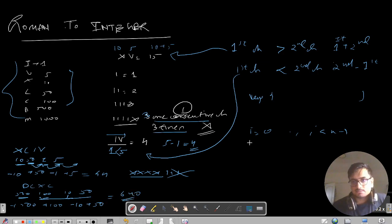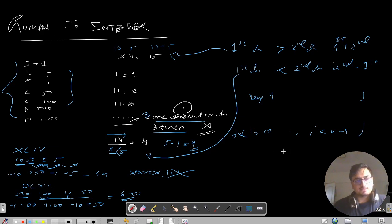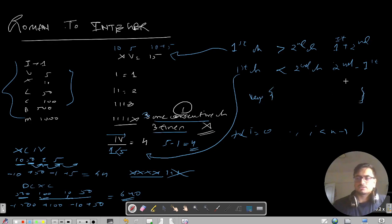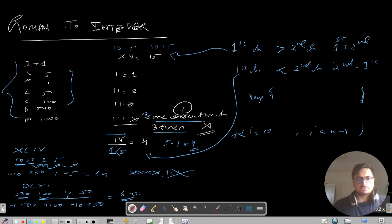Similarly, you just run a for loop, check if the current value is lesser than or greater than the next value, take the values from the map, do the sum, and return it. Please pause this video here, try to code this approach by yourself, and then we can resume ahead with the Java and C++ code.